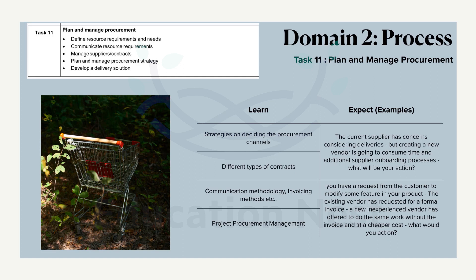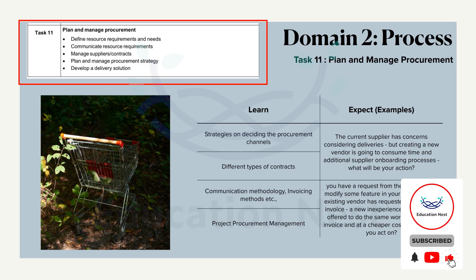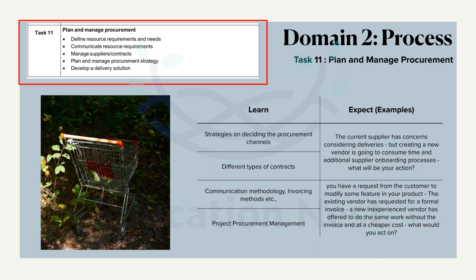Multiple procurement strategies exist. For example, a project may need to import raw materials from another country because it is cheaper abroad — the local manufacturer may charge more than an overseas one. In such cases, procurement is done internationally. For this to happen effectively, project managers must work closely with the procurement team. PMI expects us to define the resource requirements and needs, and communicate those requirements to all stakeholders, including vendors.